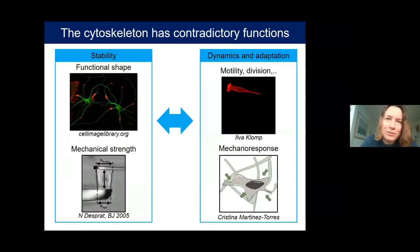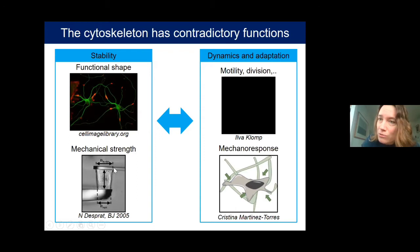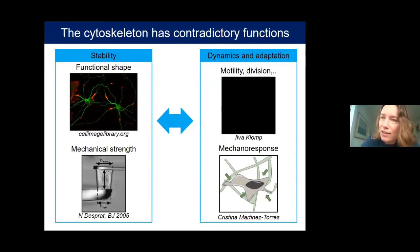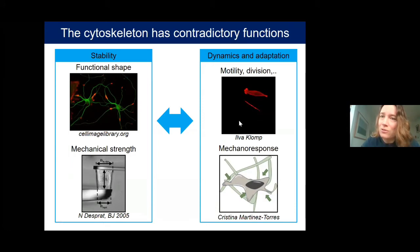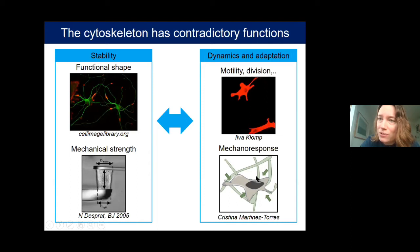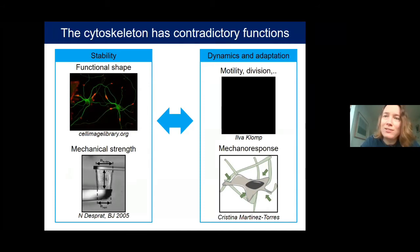The cytoskeleton has very contradictory properties. It is a scaffold that gives each cell its characteristic shape and mechanical resistance — cells are constantly challenged by large deformations and stresses and need to survive without rupturing. Yet at the same time the same network has to be dynamic, allowing the cell to change shape, move, and divide. There is also an active function in mechanosensing: cells use their cytoskeleton to measure the mechanical properties of their surroundings and adapt to it.